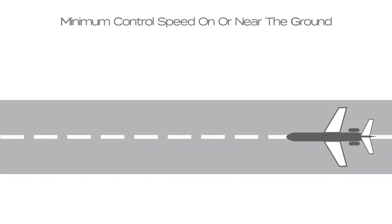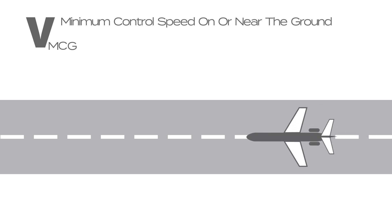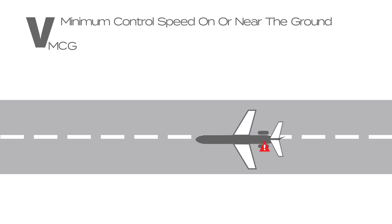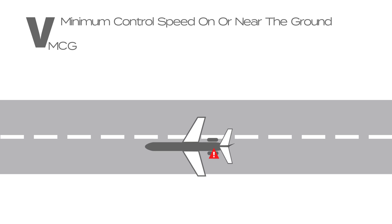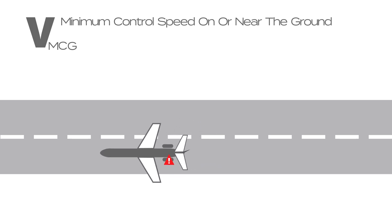Minimum control speed on or near the ground is represented by VMCG. This is the lowest speed at which the pilot has control of the aeroplane on the ground following a failure of the critical engine. Without the aid of the nose wheel, there must be enough rudder effectiveness to keep the aeroplane within 9.1 metres of runway centreline with the critical engine failed.